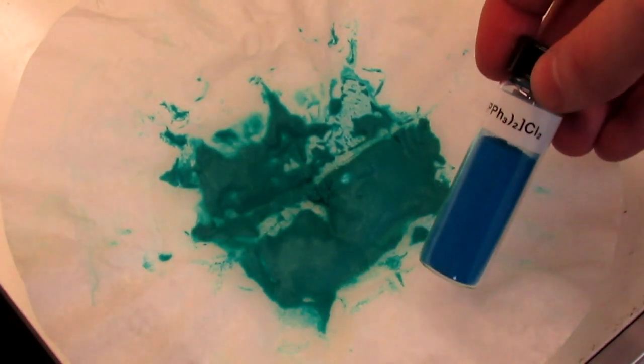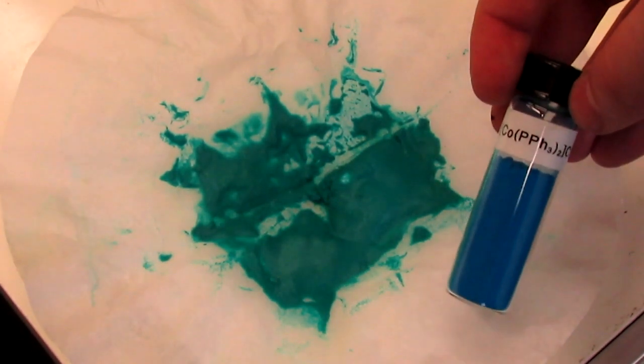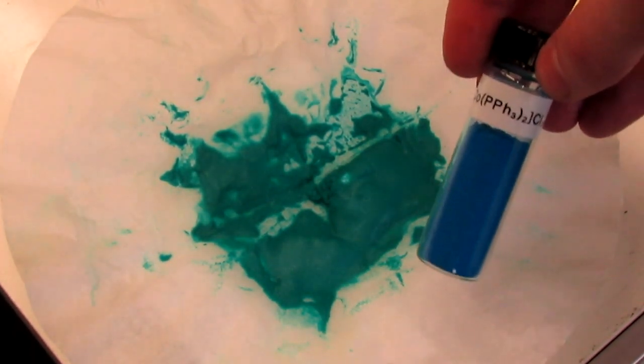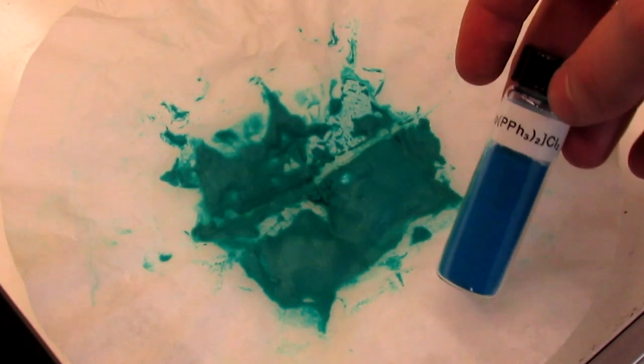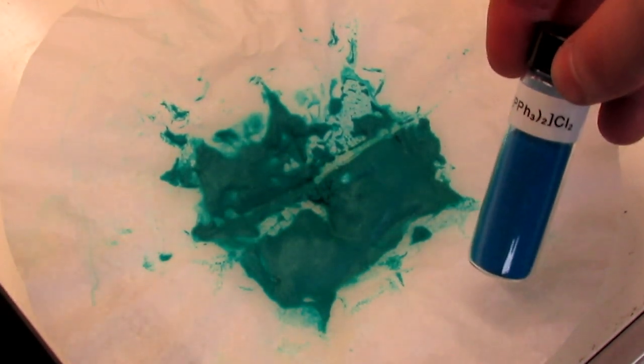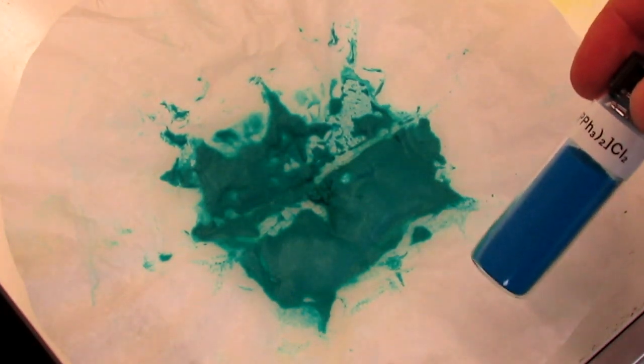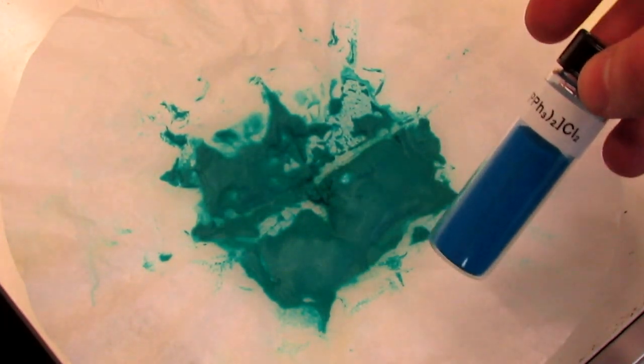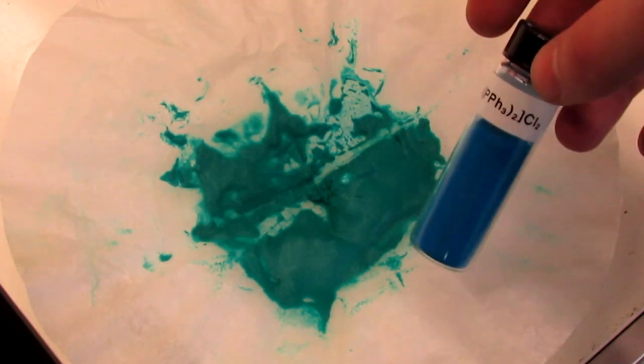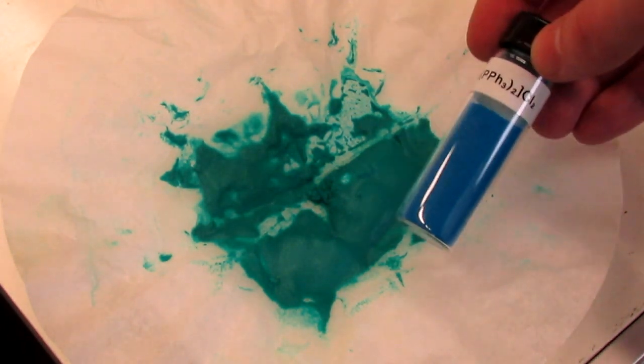Here's a side by side of the two compounds. In my hand I have the chloride complex, and on the paper is the bromide complex. It still looks a bit blue on the camera or in the video, but it is an emerald green color in real life. The camera just doesn't pick it up very well, but you can see the difference in colors here.